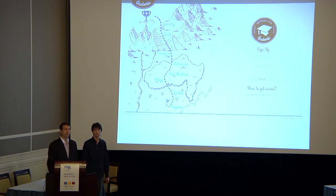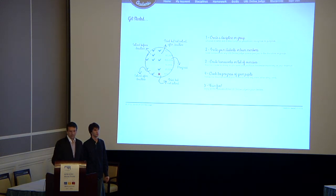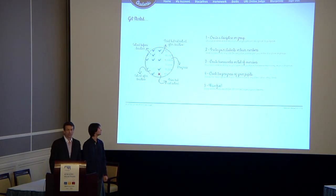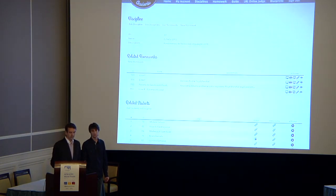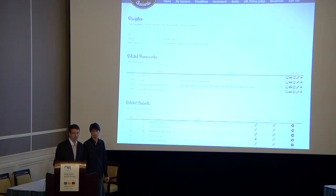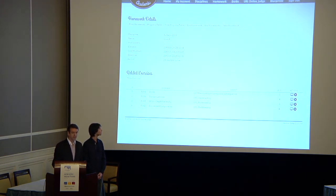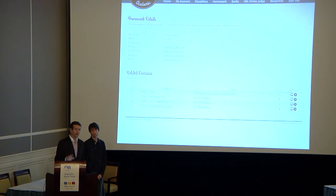This is the main page of the academic module. It is fully integrated with the system. You can create a discipline or group, invite your students or team members, then create homeworks or lists of exercises, and then check the progress of your students. Here is an example of a discipline created with some related homework — you can create as many homeworks as you want. Each homework shows details like the creation date, deadline, and the progress tracked for that homework.